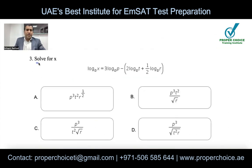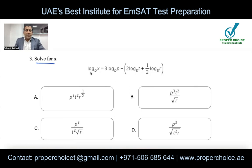Question 3: Solve for x — log(x base b) equals a complex expression. Even though it looks weird at first, going step by step makes it easy. We need to rewrite the right-hand side as a single log to the same base b so we can equate the arguments. The rule is: any number in front becomes a power, a plus between log terms becomes multiplication, and a minus becomes division.